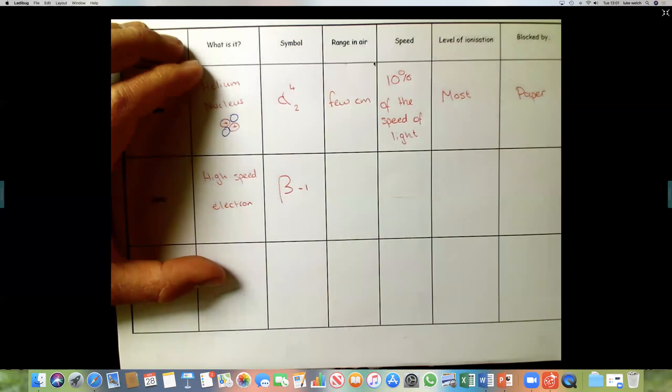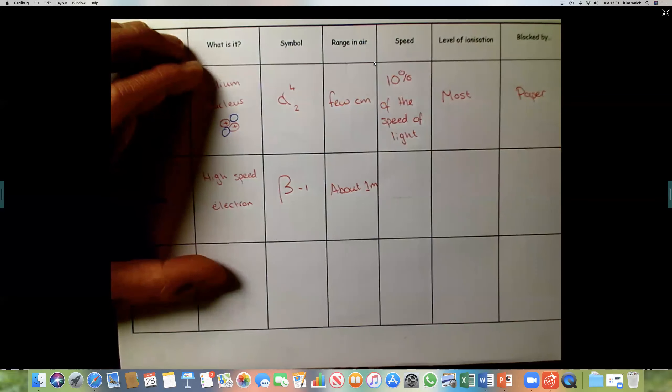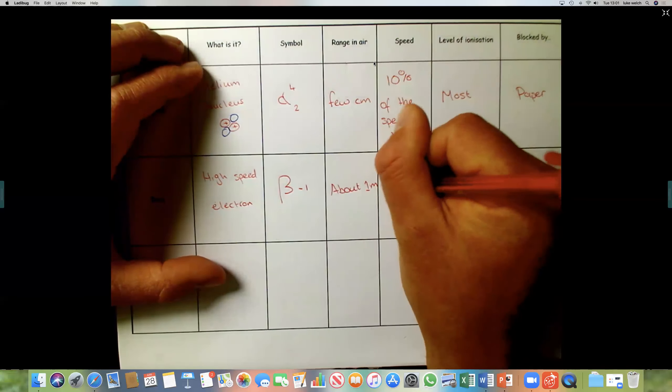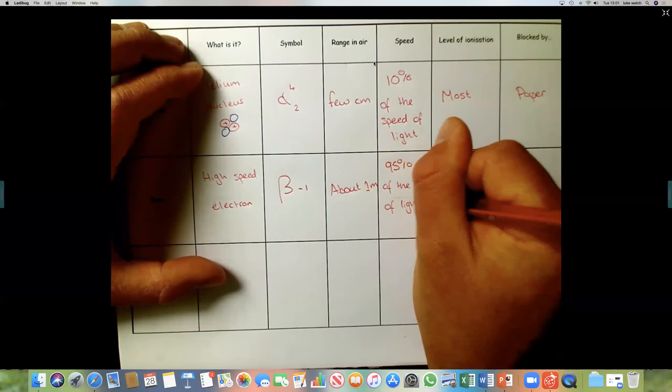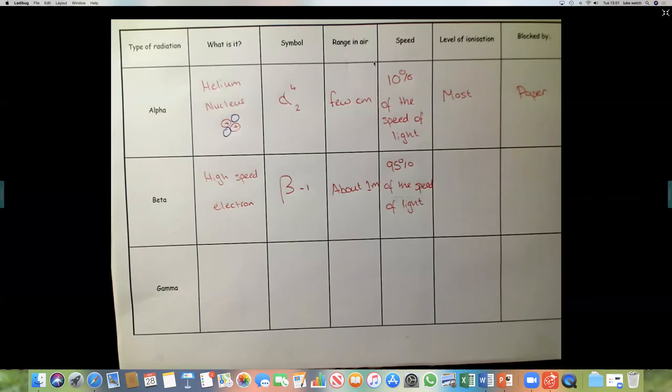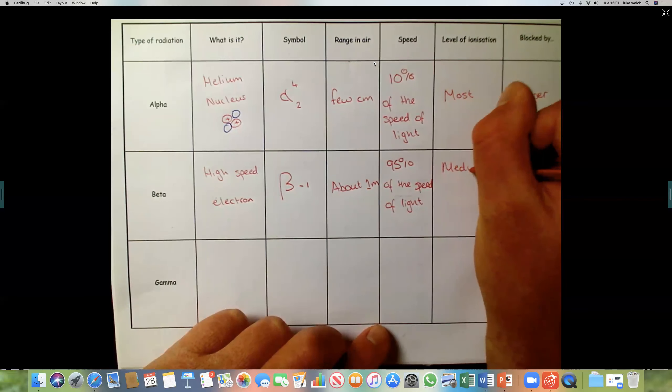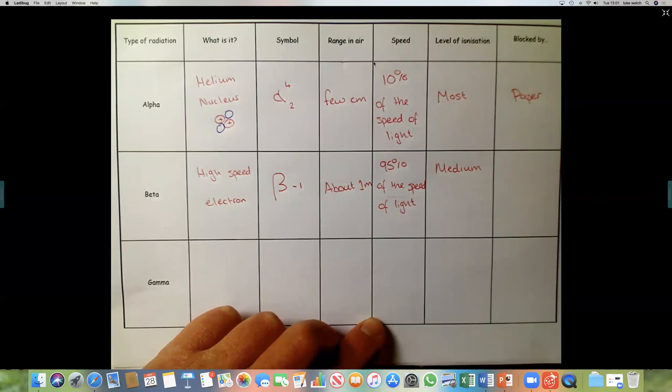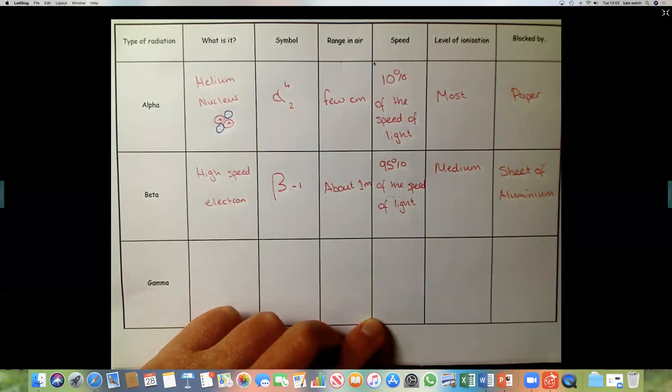Range in air, a bit further this time. It's about one meter. Speed, 95% of the speed of light. So a lot faster. Level of ionization, it is medium. So quite ionizing, but not as ionizing as an alpha particle. And it's stopped by a sheet of aluminium.